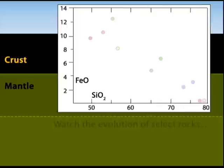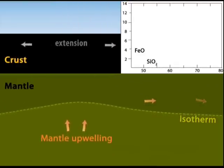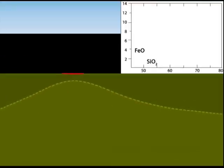During regional extension, upwelling of the mantle is reflected in the rising isotherm. Hot solid mantle rises to lower pressure. This causes partial melting of the mantle near the base of the crust.